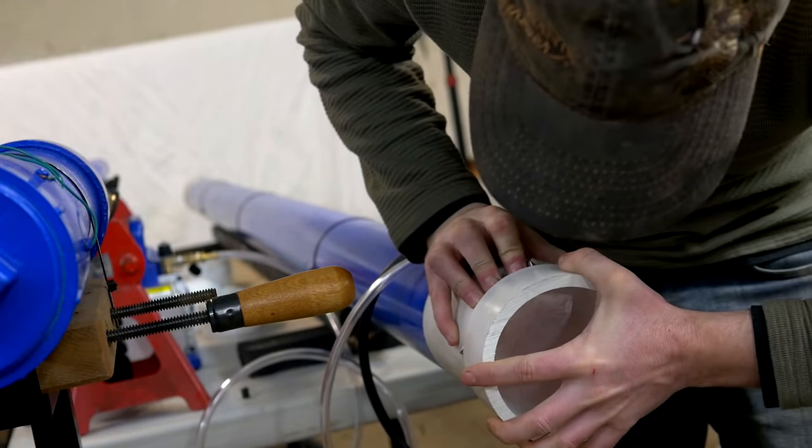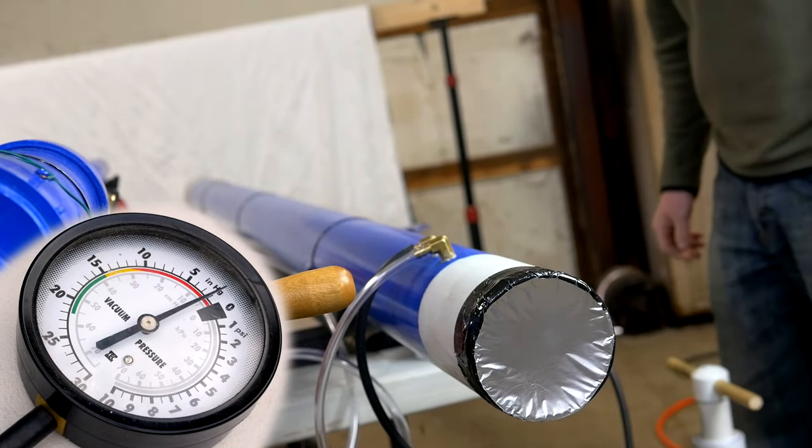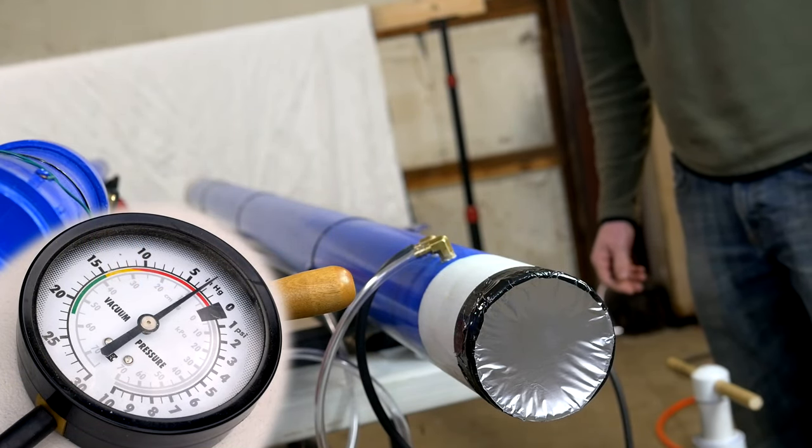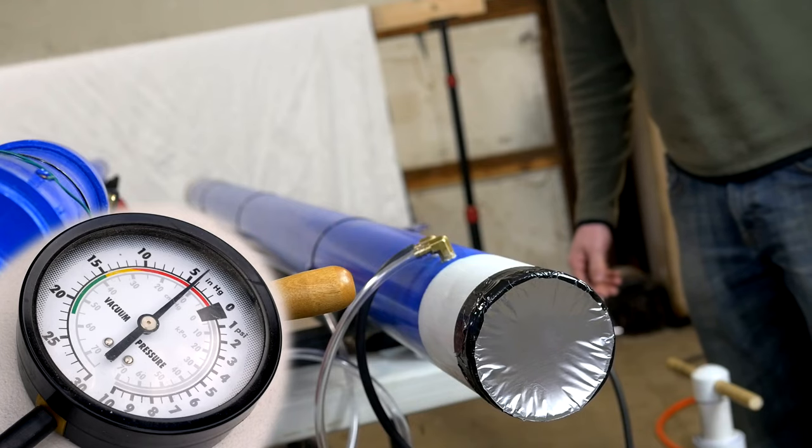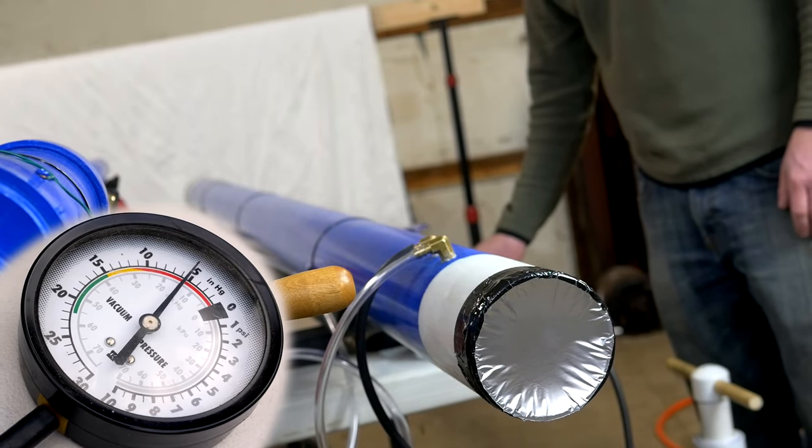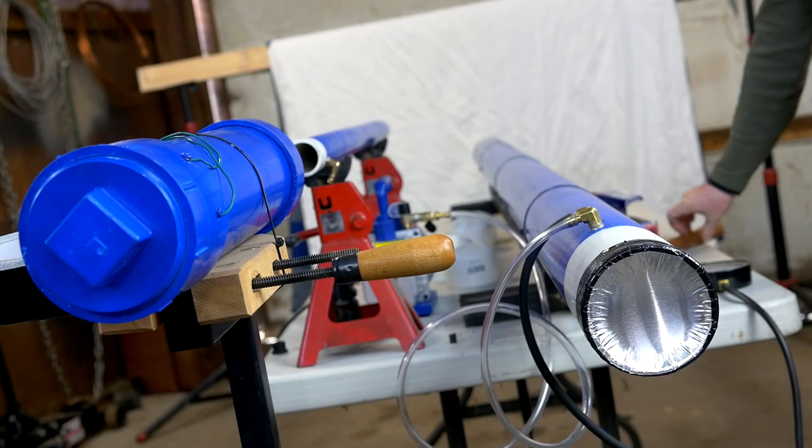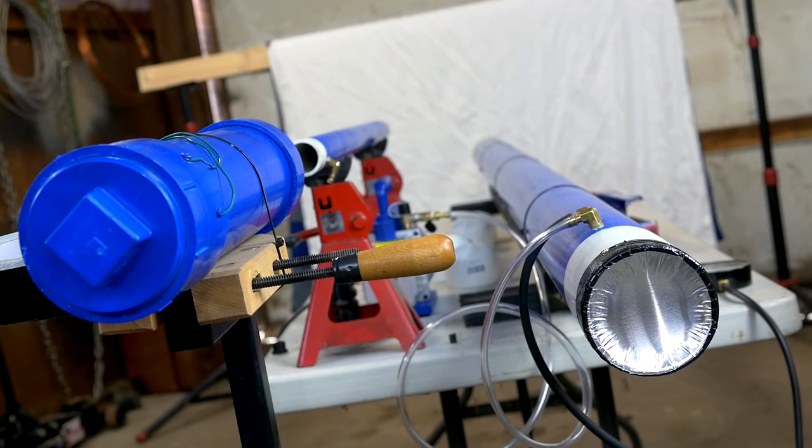With 30 inches of mercury being the maximum possible vacuum, I found that anything higher than 22 inches would allow the cannon to fire. Of course, the closer you get to 30, the more powerful it will be. Very lightweight projectiles can nearly be accelerated to the speed of sound.